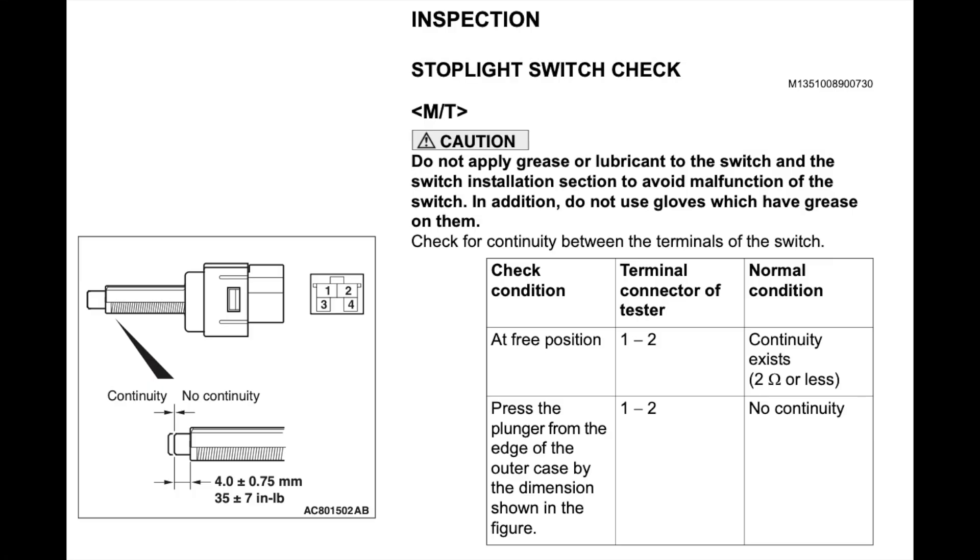We have a manual transmission without cruise control. As you can see in the diagram, the stoplight switch has a 4-pin connector, but only 2 of the pins are used, pins 1 and 2. When the brake pedal is depressed, the switch is released, and continuity exists between pins 1 and 2, which turns on the brake lights.